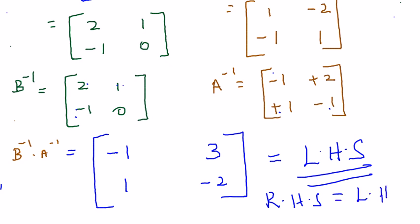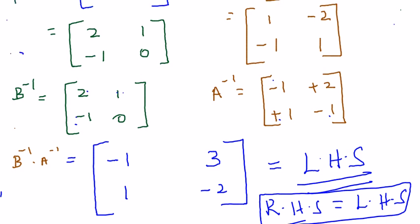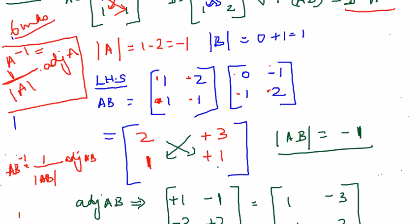It is a very simple 6-mark sum. All you have to do is be very careful about the signs when you find the adjoint. If you get that right, there is no way you can make a mistake. Don't miss it when it comes for 6 marks. If you have any doubt in finding the cofactors, refer to example 1.11 and example 1.13.